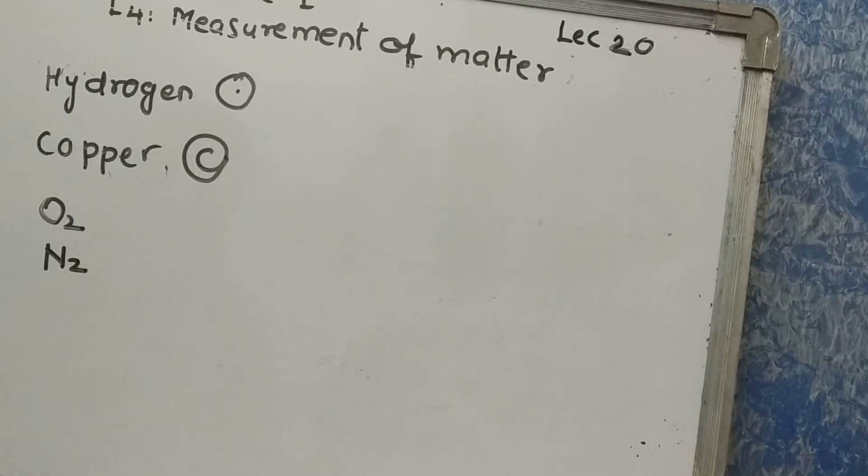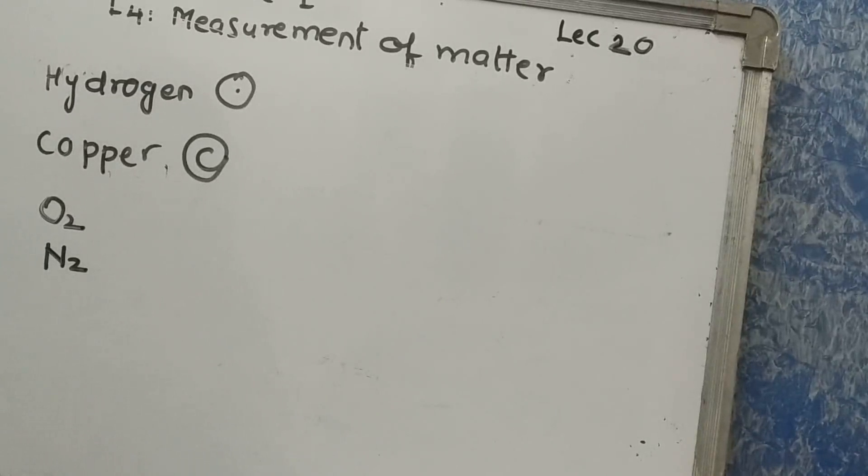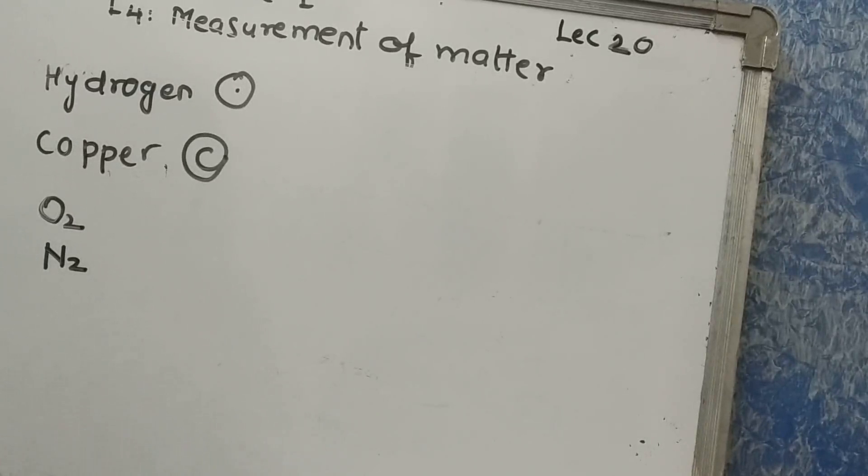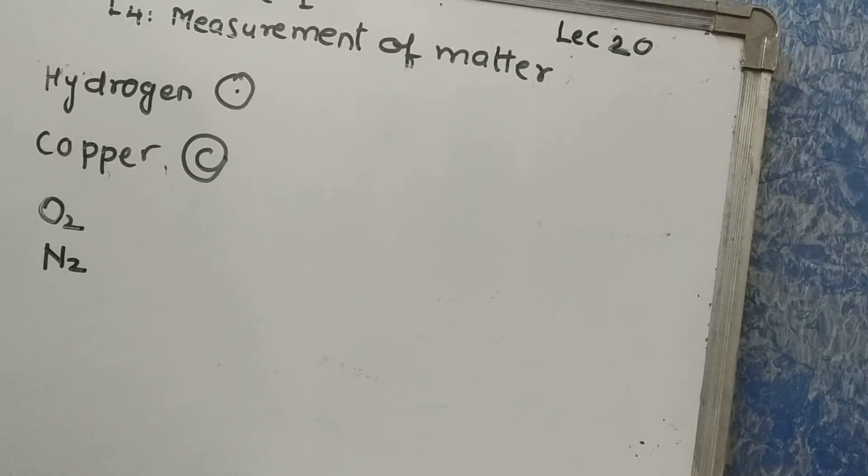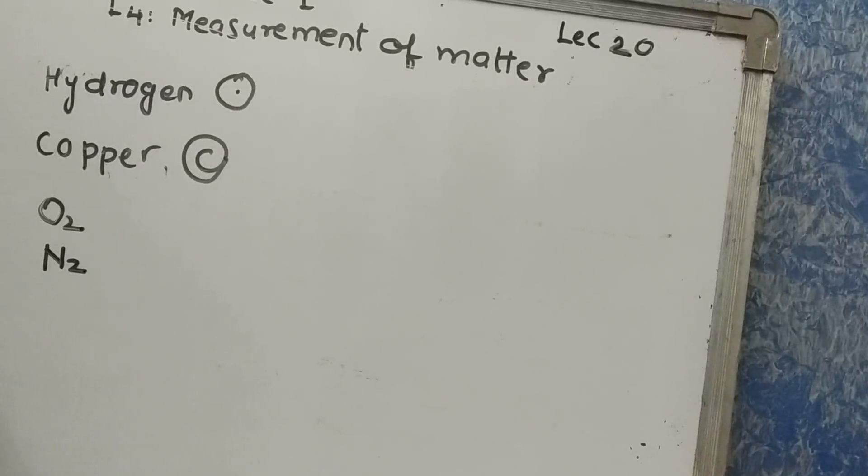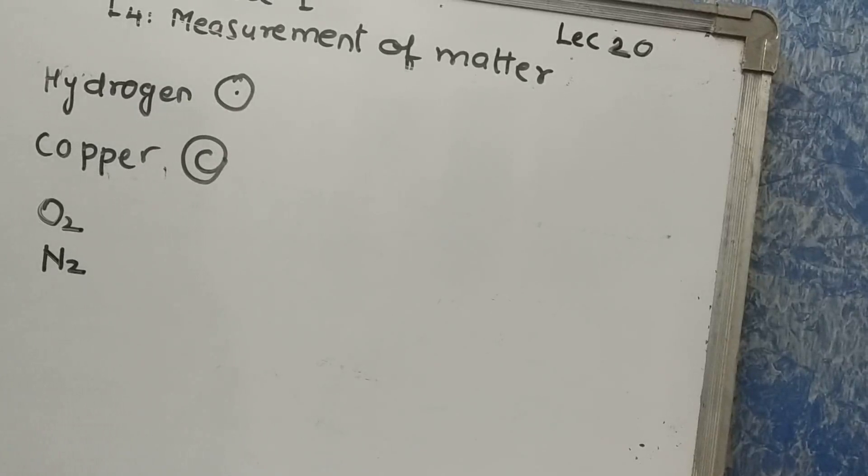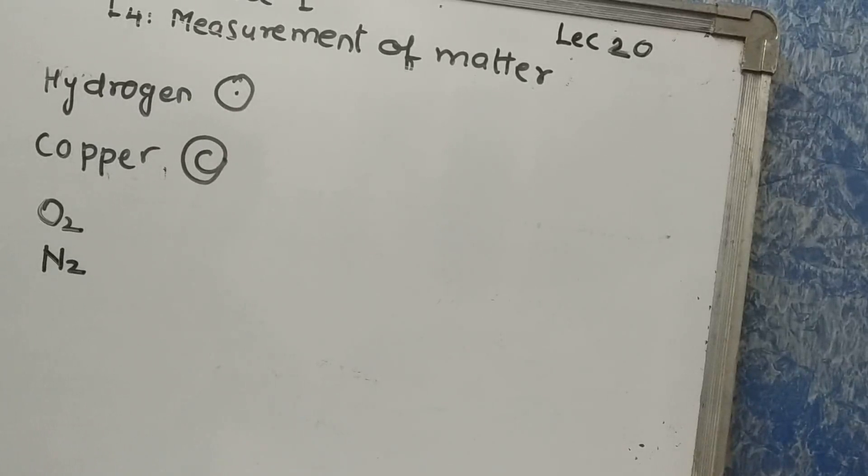Your homework for today is to write the symbols for nitrogen, magnesium, cadmium, carbon, sulfur, and potassium. So, meet you in the next lecture. Thank you.